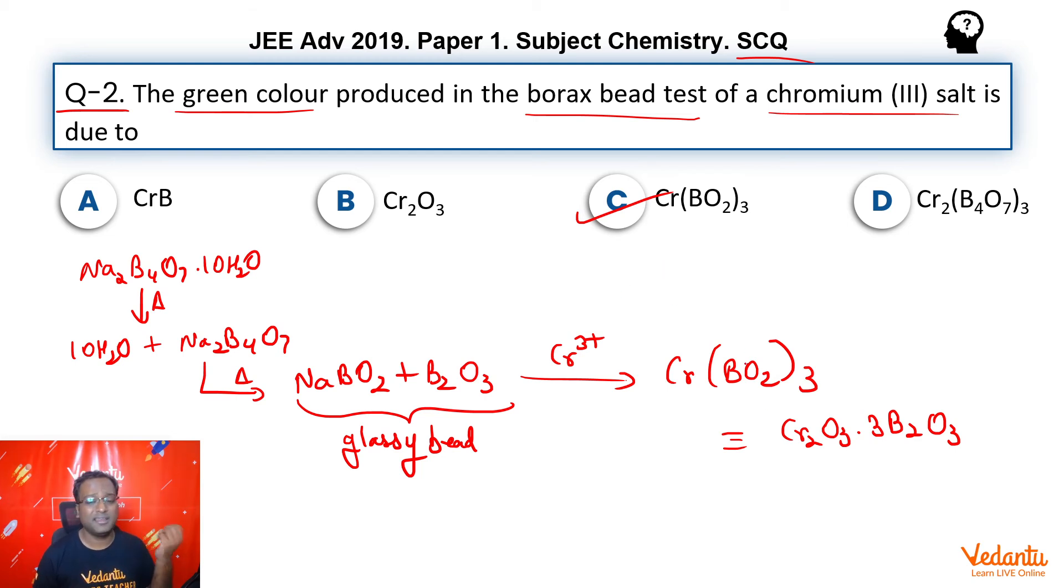Now, my question is, this green color is in which flame? Oxidizing flame or reducing flame? By default, when nothing is given in the question, we assume that they are talking about oxidizing flame and therefore, we don't change the oxidation state of the given metal ion.